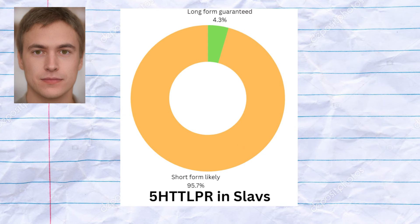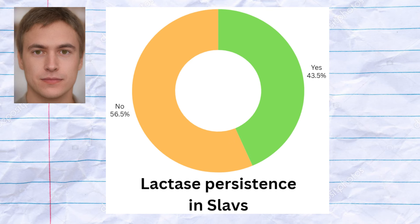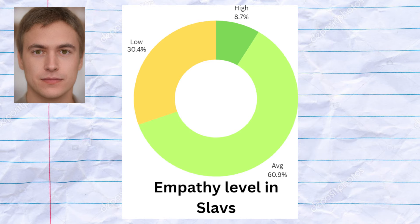One of the 23 Slavic samples, a sample from the Byzantine Empire, had a long-form 5-HTT-LPR, which leads to a significant reduction in the odds of depression. Long-form 5-HTT-LPR is most common in Europeans. The Slavic samples had a strong predisposition to autism, and 10 of them were predicted to be lactase-persistent.